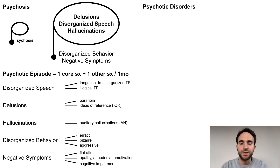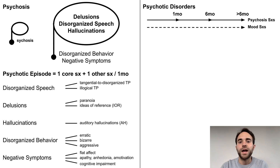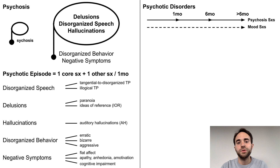Recall that most psychiatric disorders in the DSM involve a few common criteria: the symptoms are not better explained by another psychiatric disorder, the symptoms are not due to substance use or a medical condition, and the symptoms cause significant distress or functional impairment. When discussing the psychotic disorders, I won't mention these common criteria. Psychotic disorders are differentiated based on how long the psychotic symptoms have persisted, whether mood symptoms are also present, and the pattern of how psychotic symptoms align with mood symptoms over time.